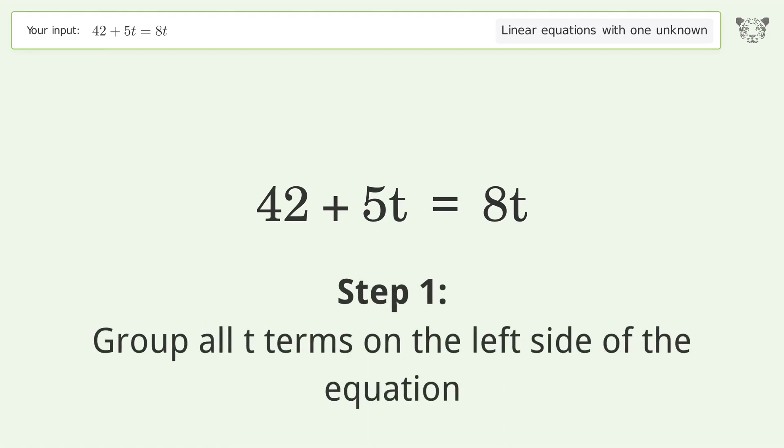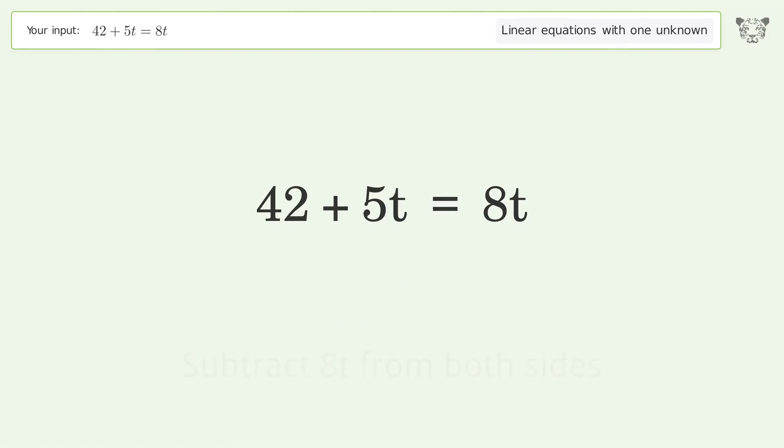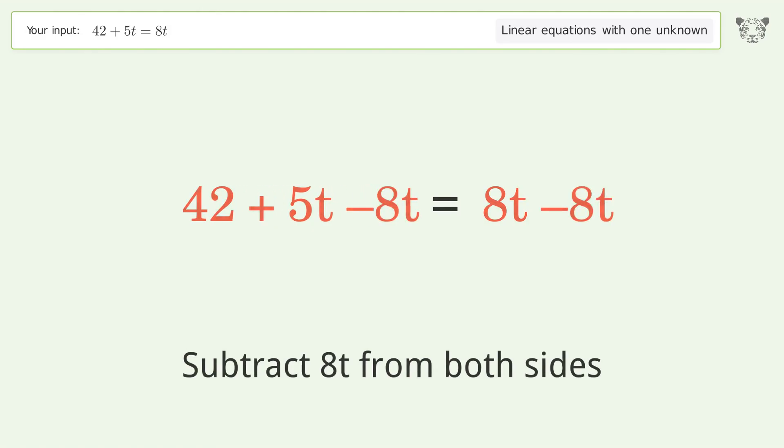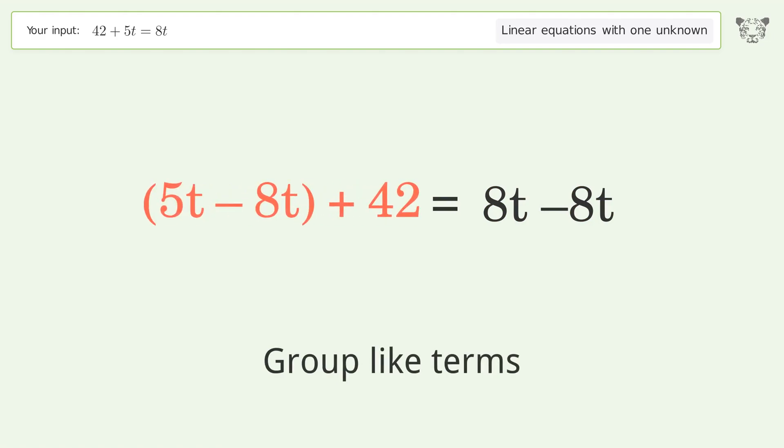Group all t terms on the left side of the equation. Subtract 8t from both sides. Group like terms. Simplify the arithmetic.